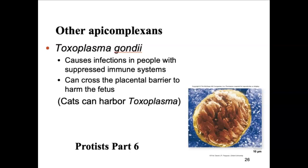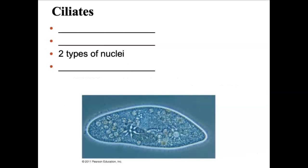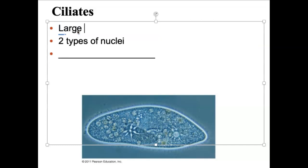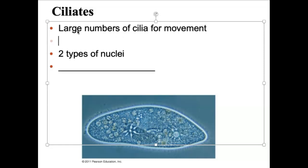This brings us to our third group of alveolata: the ciliates. Ciliates have a large diversity of ecological roles — a lot of them out there in different aquatic environments, freshwater and saltwater. The defining features we're going to see with these guys are large numbers of cilia that they use for movement. Cilia look like tiny little hairs all across their entire body, used to sweep, propel, and push themselves around incredibly fast. Imagine having a boat with 10,000 little oars sticking out the sides.